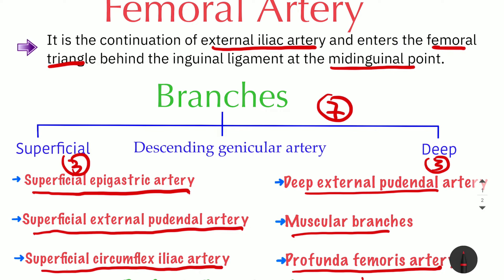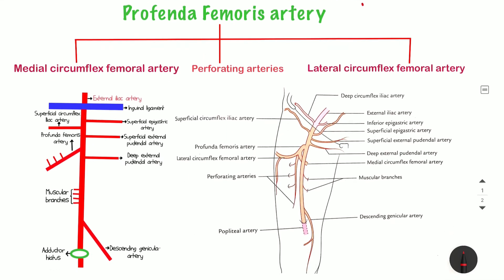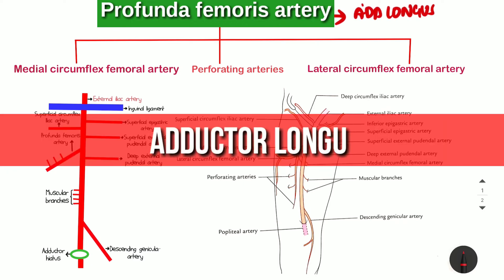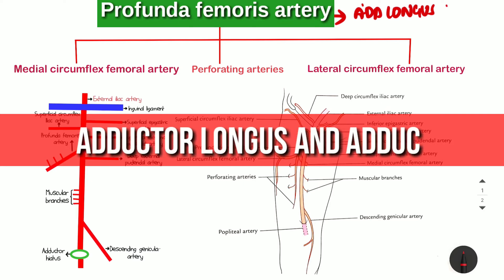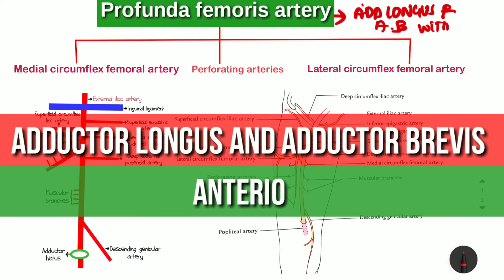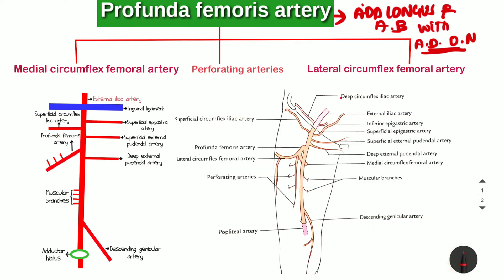Now we are going to study about the profunda femoris artery. This profunda femoris artery is present between the adductor longus and the adductor brevis muscles. Along with it, there is also the anterior division of the obturator nerve.